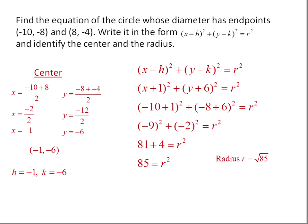We know then that our radius is the square root of 85. And our circle is x plus 1 squared plus y plus 6 squared equals 85.